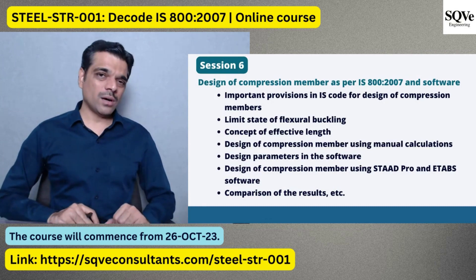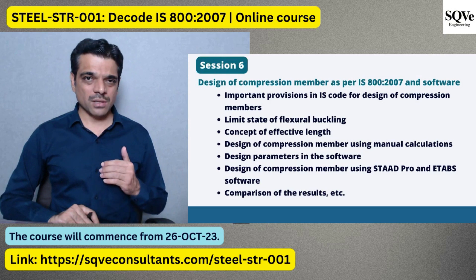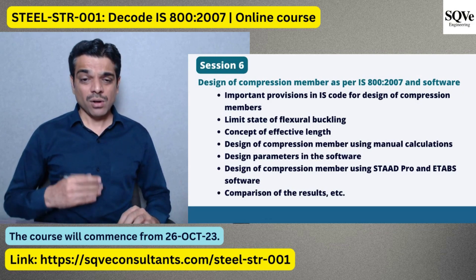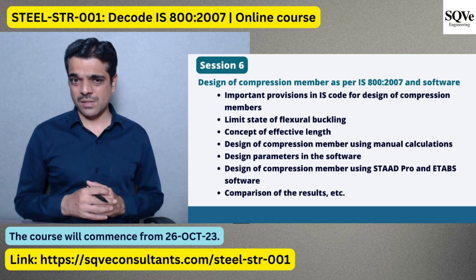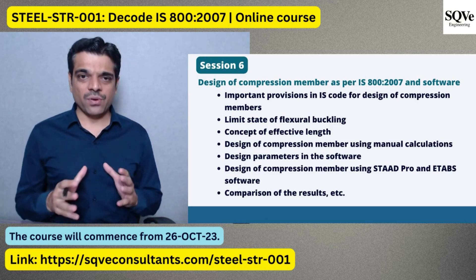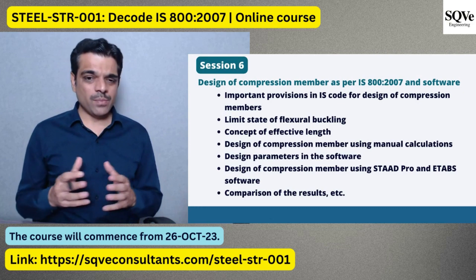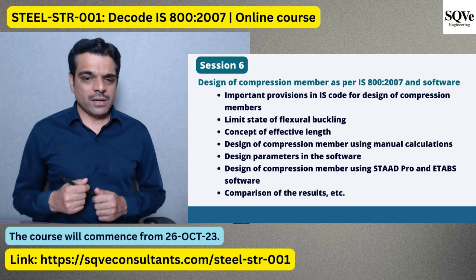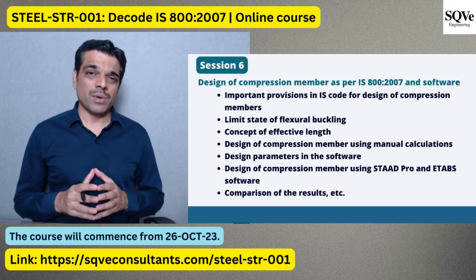The next session covers design of compression members as per IS code. We will discuss important IS code provisions, the key limit state of flexural buckling for columns, and the concept of effective length — a topic that receives many questions. We will cover how to define appropriate effective length for different cases, design parameters in software, and perform the design in StaadPro and ETABS, comparing with manual calculations.